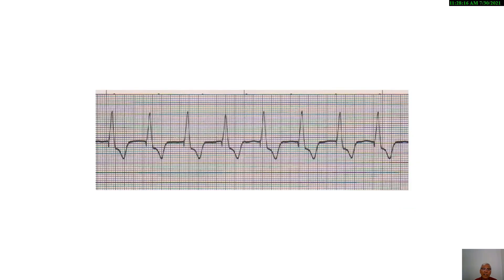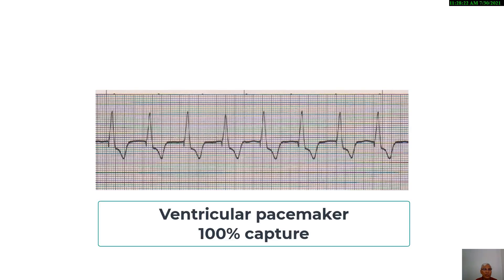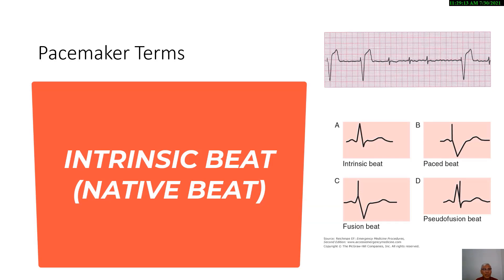In this example of a ventricular pacemaker, each pacing spike is followed by a QRS complex. Each spike was successful in producing a depolarization wave as manifested by the QRS complex, illustrating a fully functioning pacemaker with 100% capture — meaning the electrical stimuli produced by the pacemaker successfully caused a wave of depolarization.